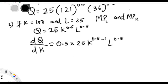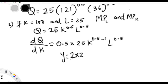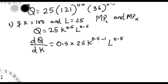The reason L doesn't turn to zero is that there is no plus sign separating them — it's multiplication. It's like when you have y = 2xz and you differentiate with respect to x: the z is treated as a constant, just like the 2. So in the Cobb-Douglas function, L is treated as a constant with respect to K — that's why it doesn't change.